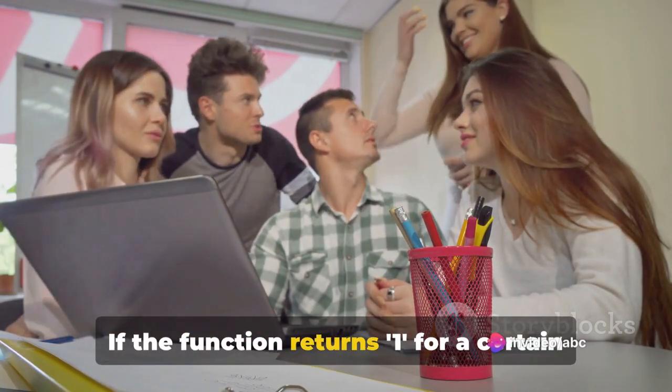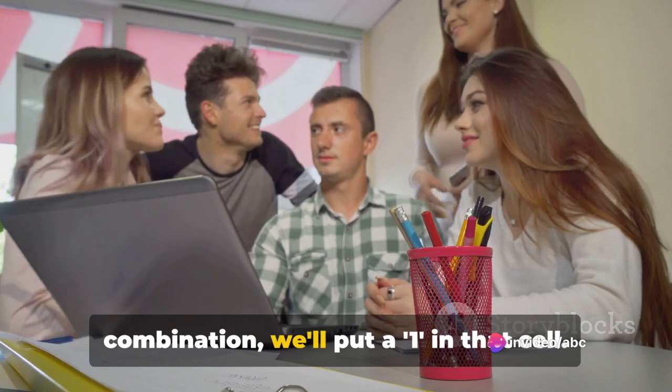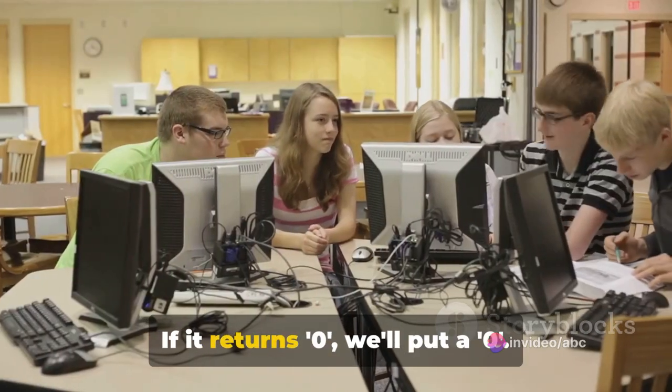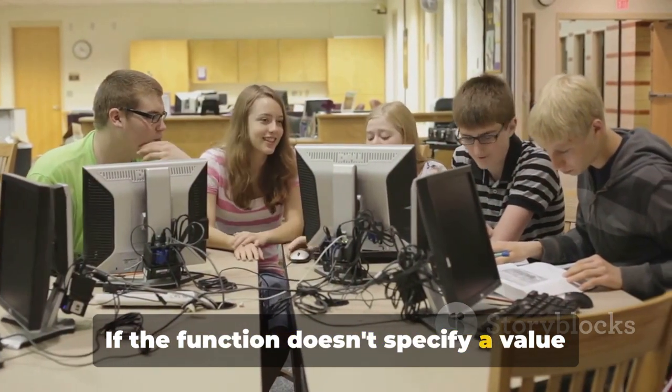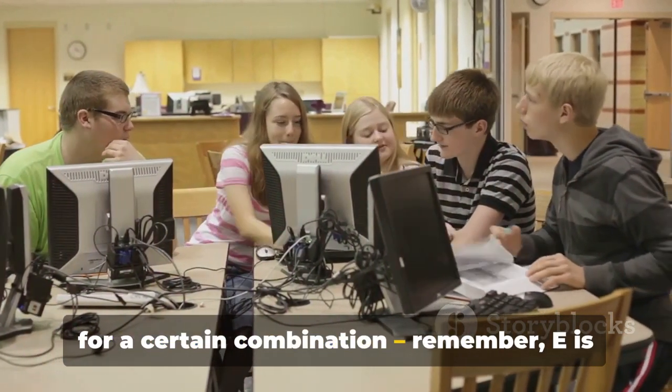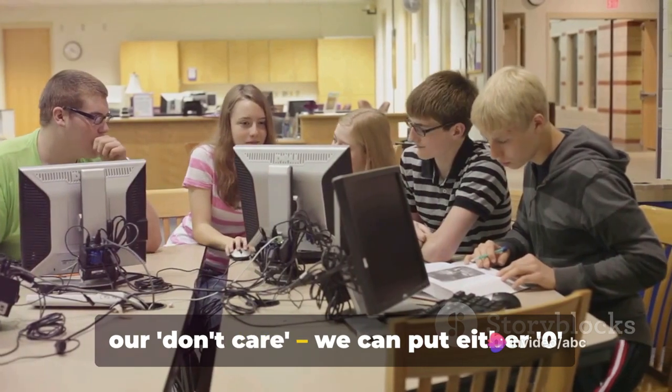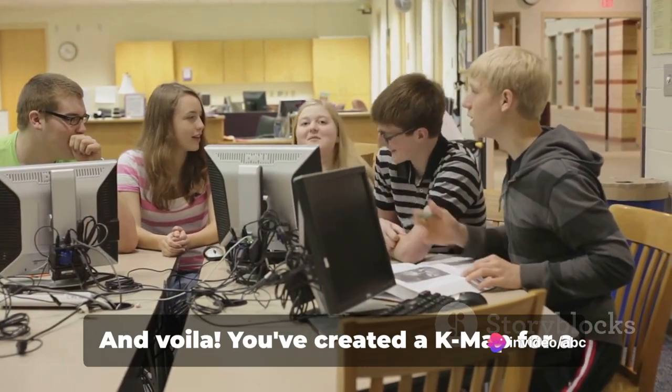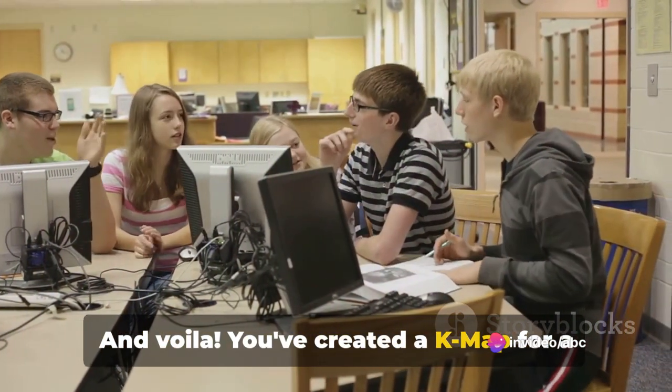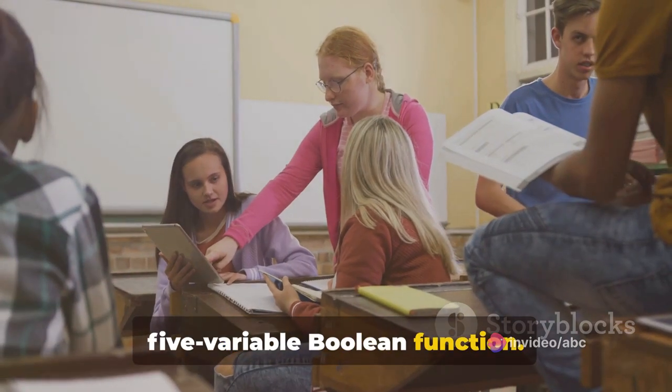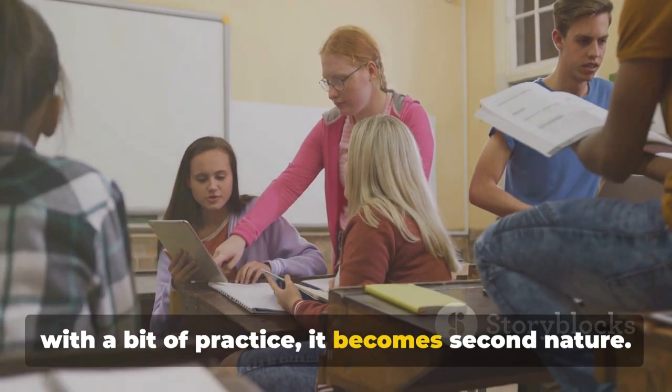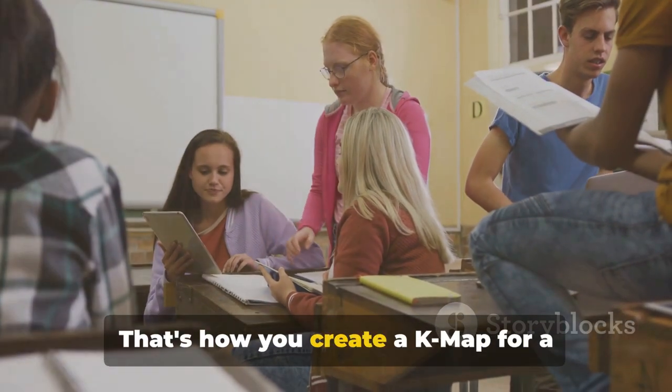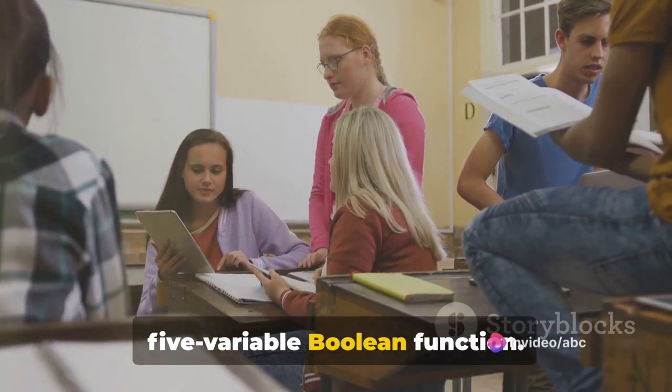If the function returns a 1 for a certain combination, we'll put a 1 in that cell. If it returns 0, we'll put a 0. If the function doesn't specify a value for a certain combination, remember E as our don't care, we can put either 0 or 1, and voila, you've created a K-Map for a 5-variable Boolean function. It may seem like a handful at first, but with a bit of practice, it becomes second nature. That's how you create a K-Map for a 5-variable Boolean function.